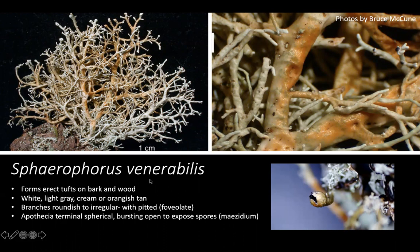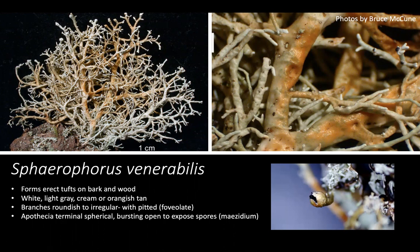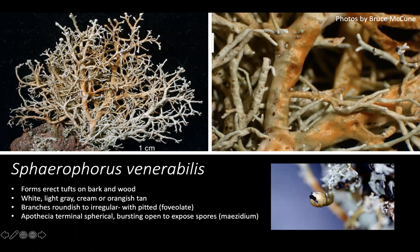What's unique about this genus is the terminal spherical apothecia. It's actually a modified apothecia called a mazidium — or mazidia in the plural — and you can see that in the picture on the bottom right. What's unique about this type of apothecia is that instead of spores being ejected from their asci, they're released through the slow disintegration of this outer circular structure, exposing the spores.